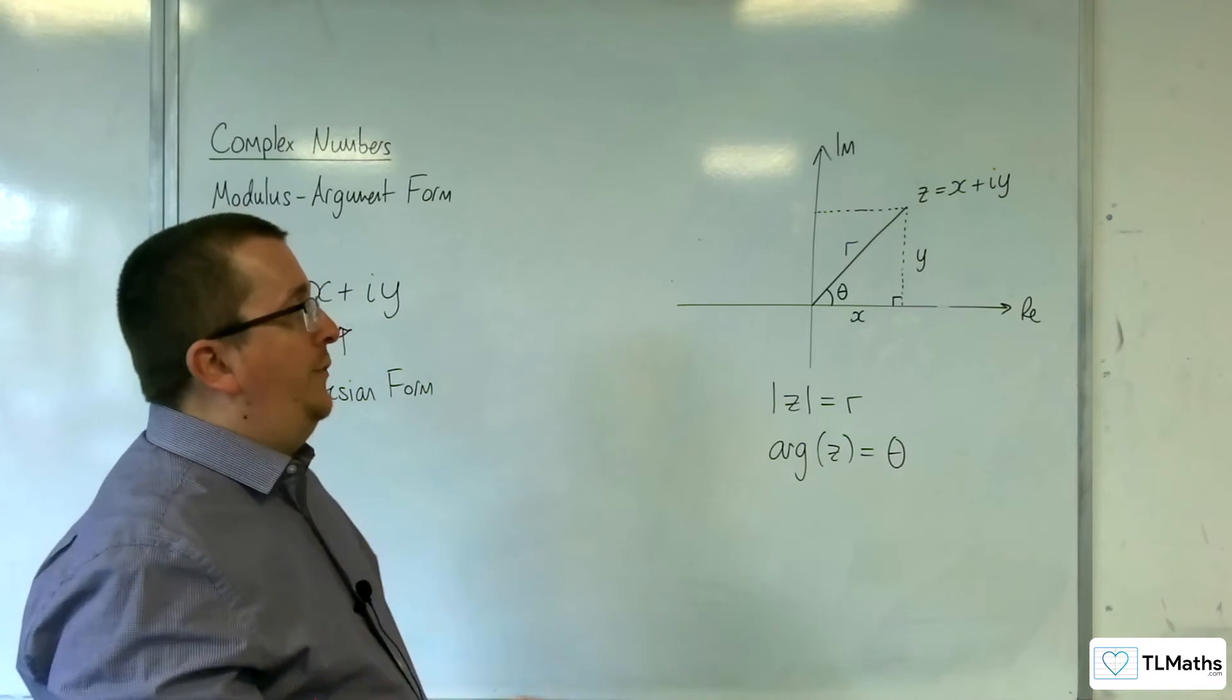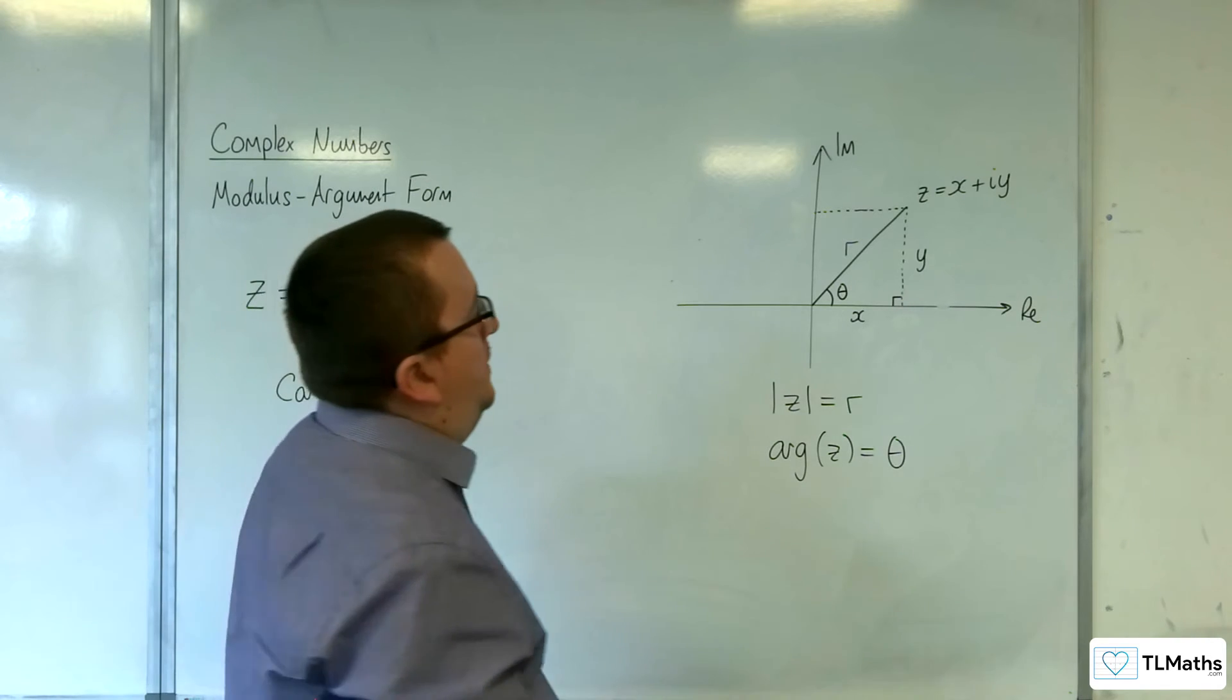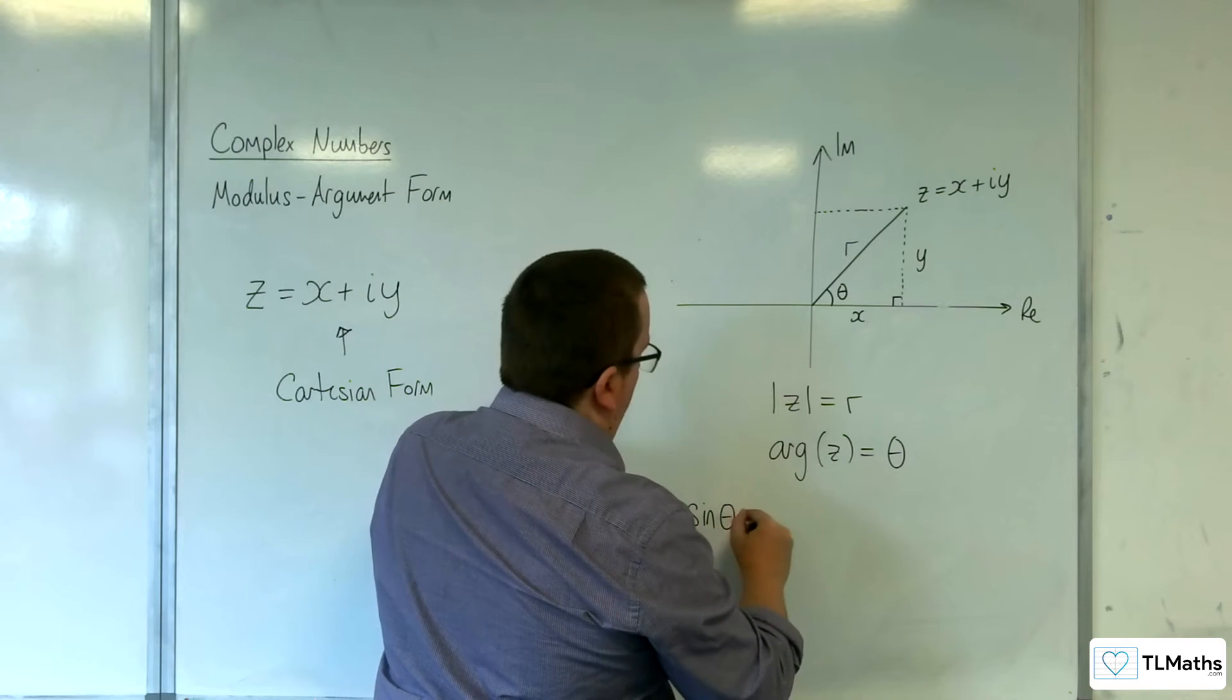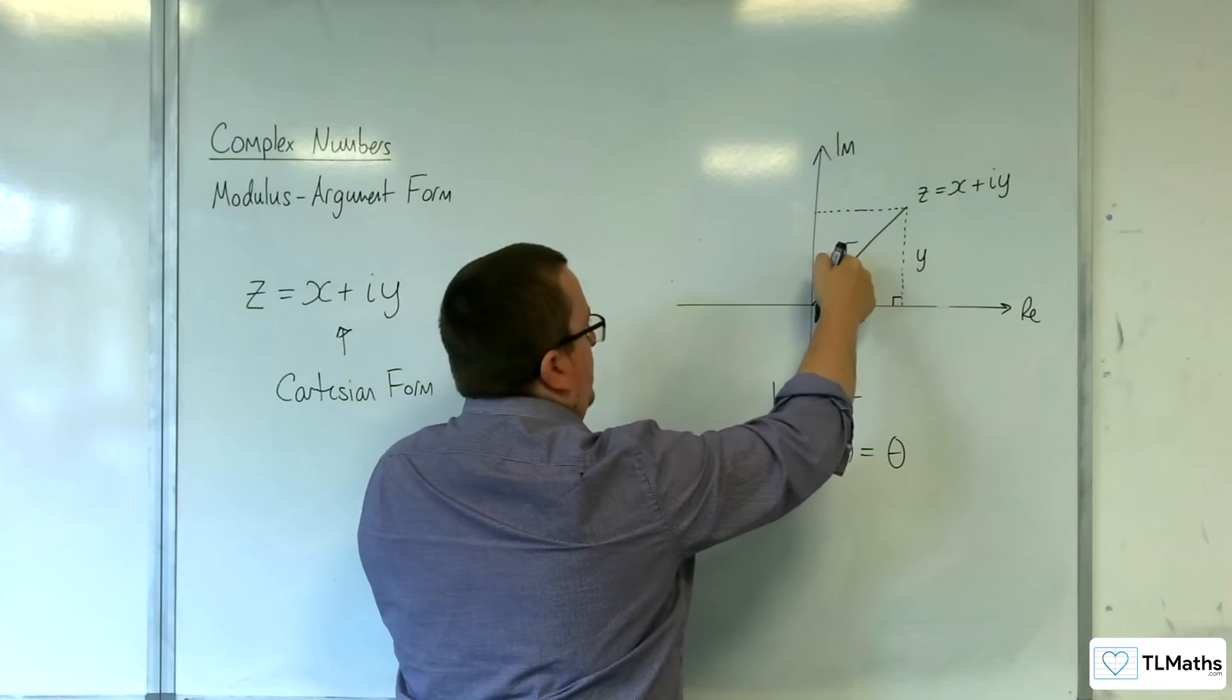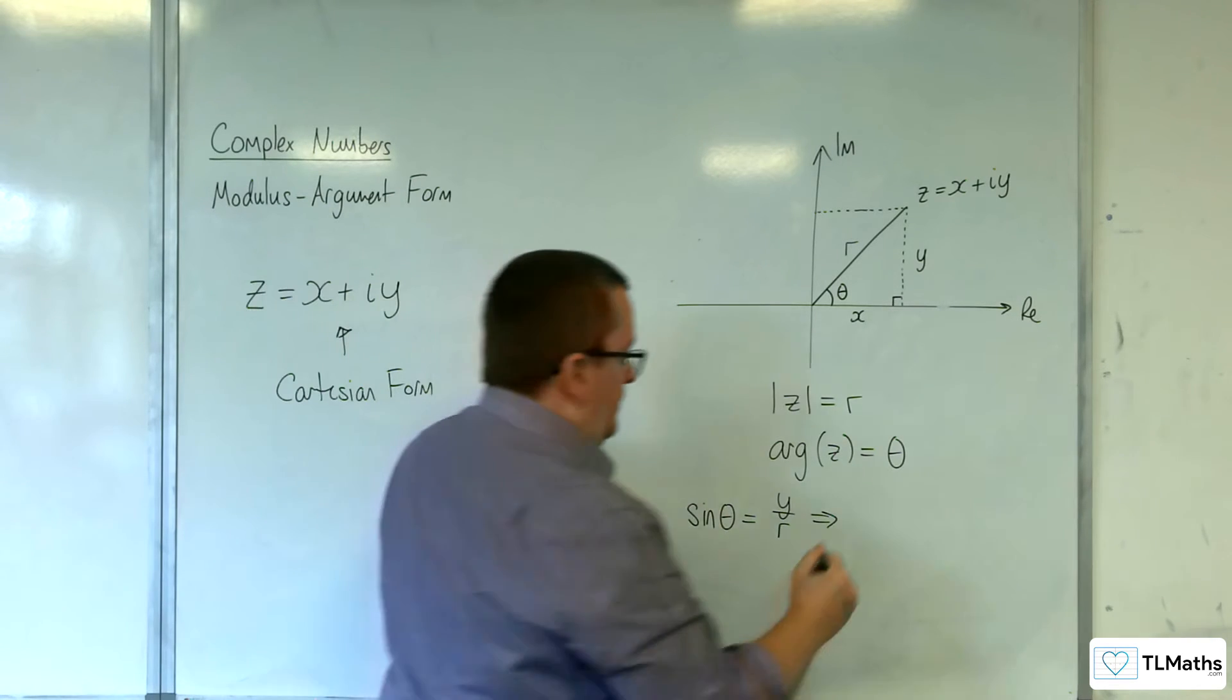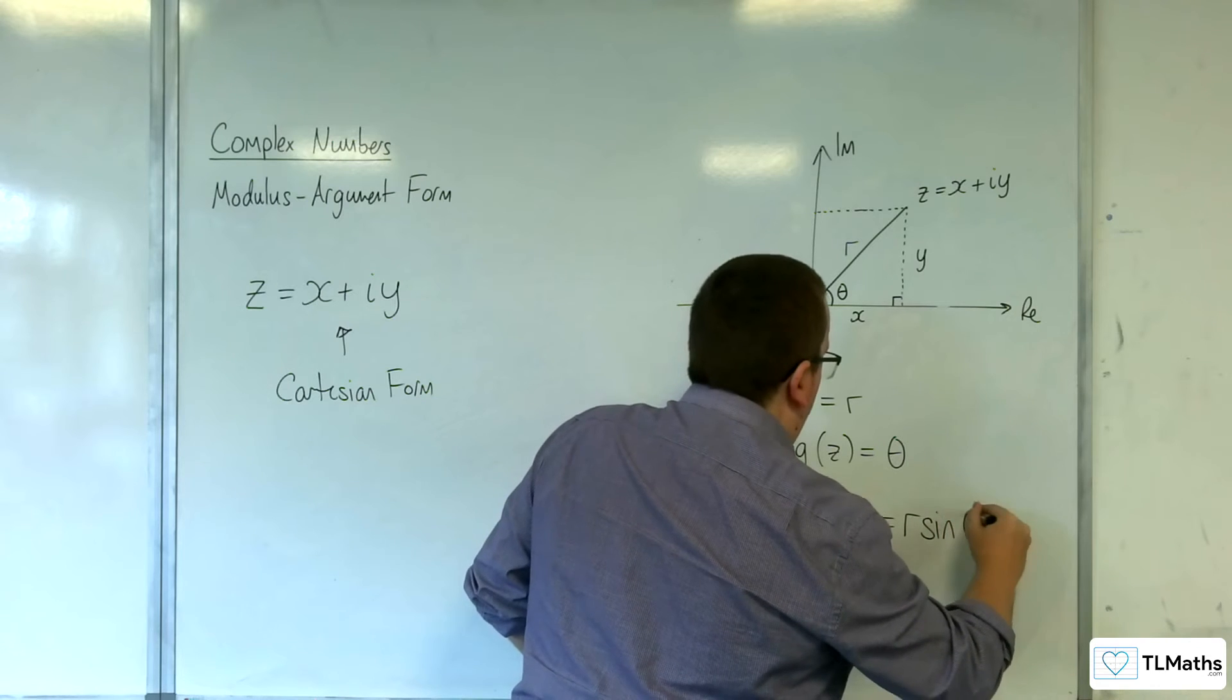Now, if you were to use a bit of basic trigonometry, SOHCAHTOA, then you could say that sine of your angle is equal to the opposite over the hypotenuse, so Y over R. So, if you multiply both sides by the R, you'd be able to say that Y is R sine theta.